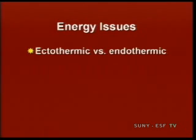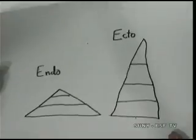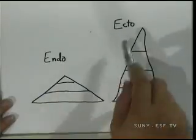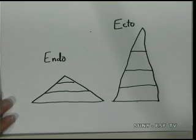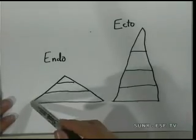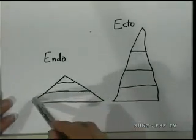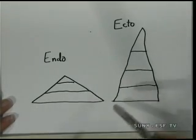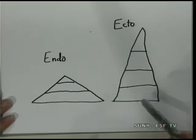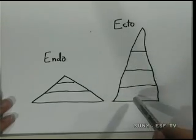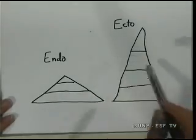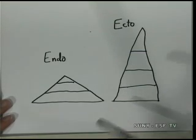Another energy issue is ectotherms versus endotherms — cold-blooded versus warm-blooded organisms. Looking at the document camera drawings: in an ecosystem dominated by endotherms, there's more energy loss because they heat themselves internally, so the available energy quickly decreases and the pyramid may not go as high. In an ectotherm-dominated ecosystem, there's less energy loss per level, and the pyramid might go higher because more energy is available.